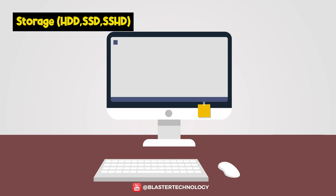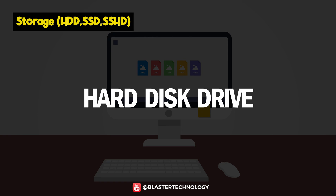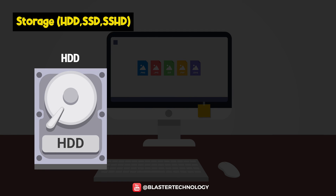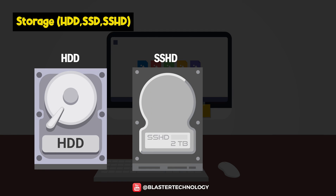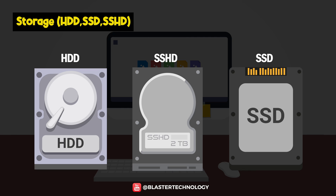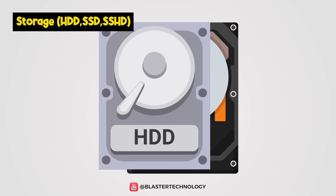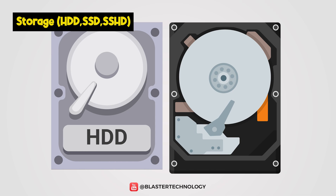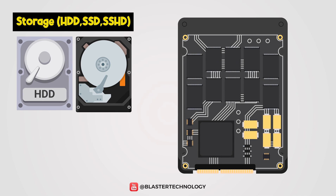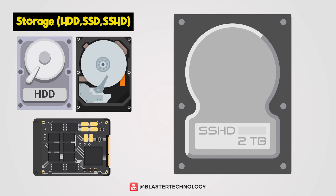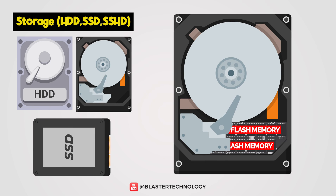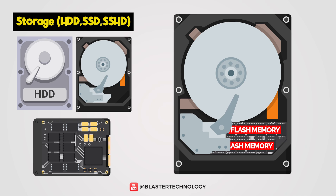To permanently store information in the computer, we need another type of memory called a hard disk drive HDD, SSHD, or SSD solid state drive. The HDD consists of a disk that is read by a mechanical arm, while the SSD has flash memory and is much faster than the HDD. SSHD is also a hybrid storage unit, a combination of SSD and HDD.